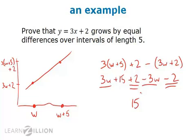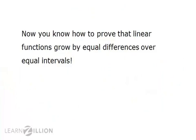So regardless of w, regardless of the particular x-coordinate, as long as the difference between the x-coordinates of the points on the line is 5, the difference between the y-coordinates corresponding to them will be 15. Now you know how to prove that linear functions grow by equal differences over equal intervals.